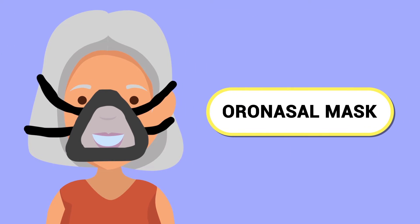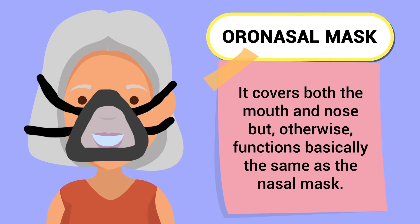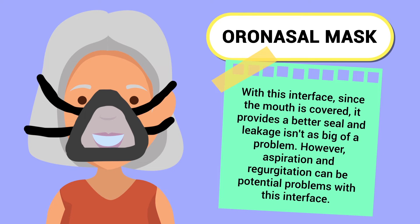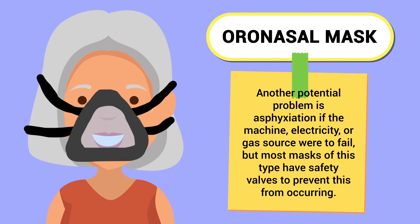Then there is the oral nasal mask, which covers both the mouth and nose but otherwise functions basically the same as the nasal mask. Since the mouth is covered, it provides a better seal and leakage is not as big of a problem. However, aspiration, regurgitation, and asphyxiation — if the machine, electricity, or gas source were to fail — can be potential problems with this interface.